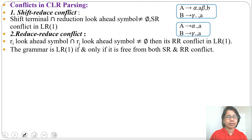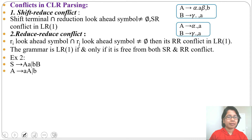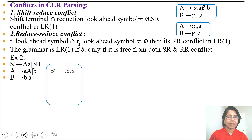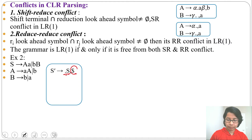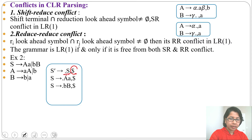Let's see an example. The grammar is: S → aA | bB, A → aA | bB, B → b | a. The initial state i0 will contain the augmented production S' → ·S with lookahead dollar. Since dot is before S, we add the closure. The lookahead will be dollar since nothing follows S, so FIRST(dollar) = dollar. We add S → ·aA with lookahead dollar, and S → ·bB with lookahead dollar.